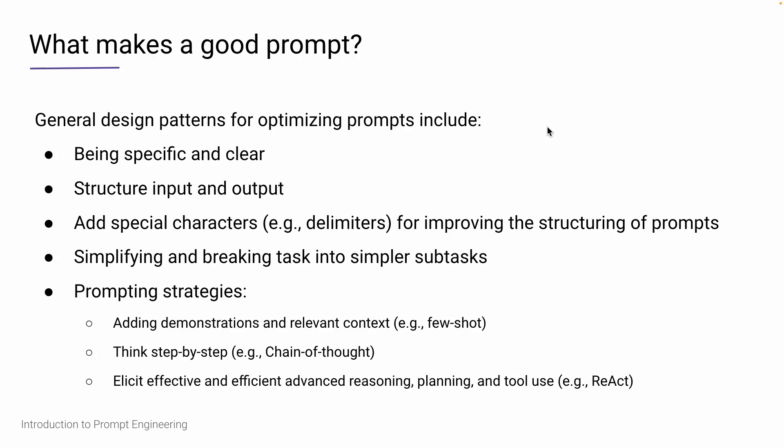One strategy is to add demonstrations and relevant context, such as few-shot prompting, where you're giving the model some examples to steer it better on what high-quality outputs look like. Another strategy is to allow the model to think step by step — this is known as chain of thought. This helps the model break the task down into parts and tackle each one individually to achieve an overall goal.